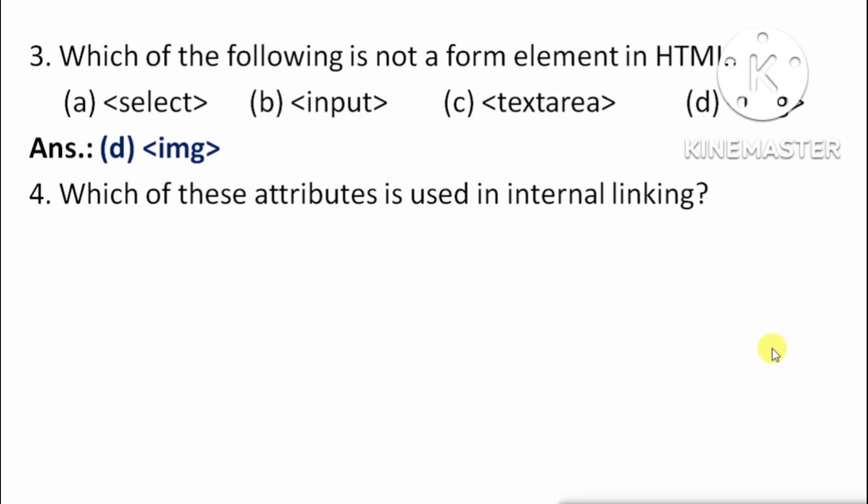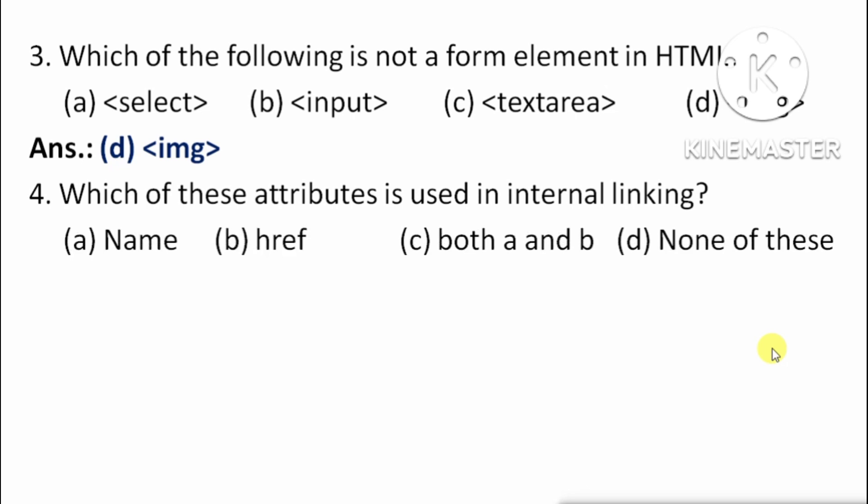Next question: Which of these attributes is used in internal linking? Options: A) name, B) href, C) both A and B, D) none of these.